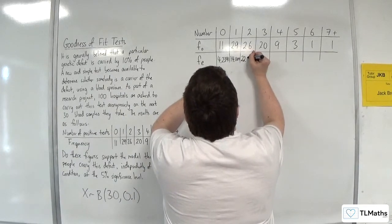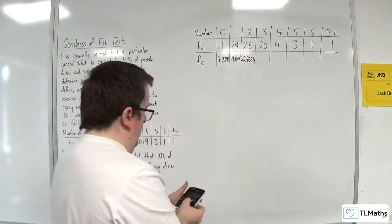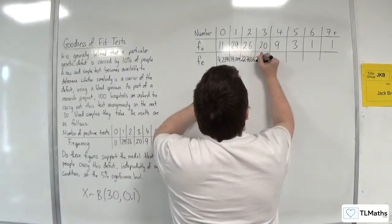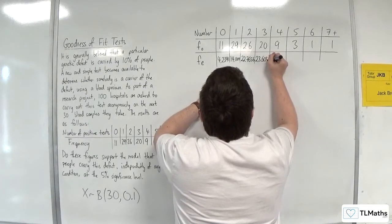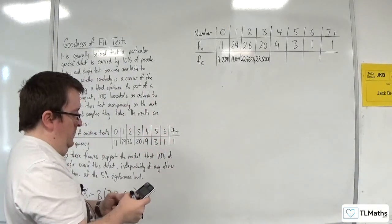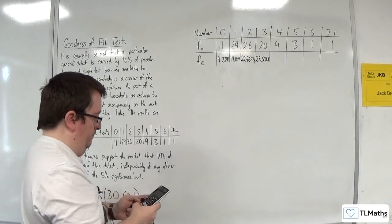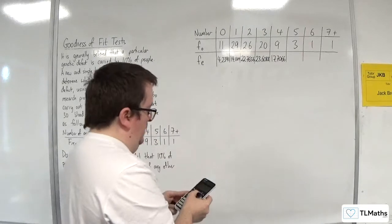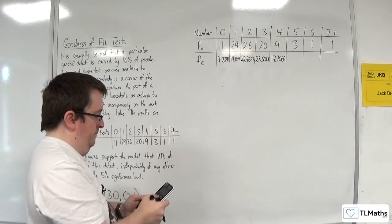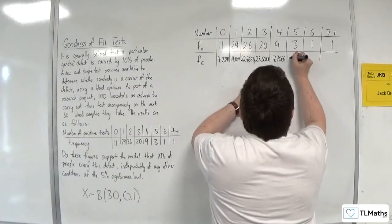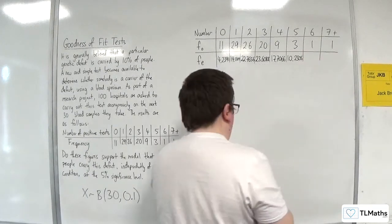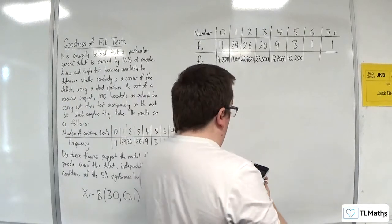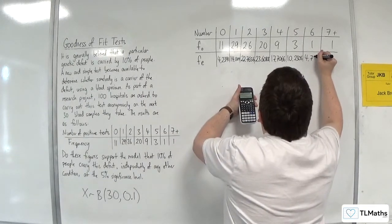Let's change it over to 2, 27.6656. Let's change it over to 3, 23.6088. Change it over to 5, 10.2305. Let's change it over to 6, 4.7363.